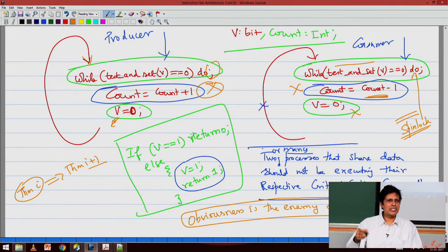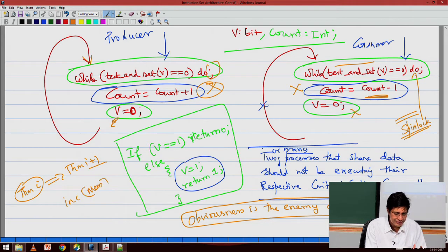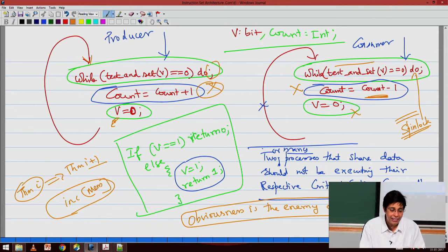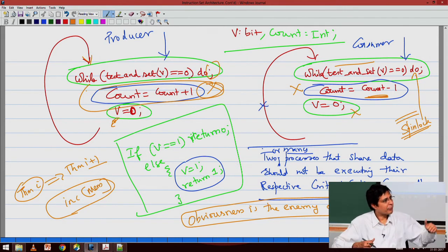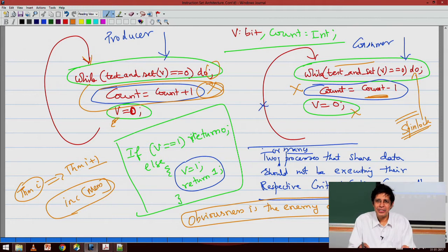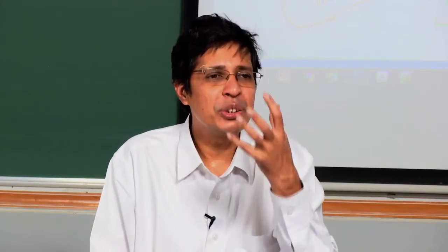Why cannot you put increment-memory? Because that is not a single atomic instruction internally. This is a toy example for me to explain why it works. Whatever you put inside the critical section will be a big program. When you do the operating system course, you will have something called a super block. The Unix file system has a super block — one structure on which there will be many concurrent transactions. Any process that wants to open a file has to touch the super block in some way.